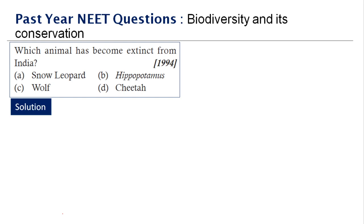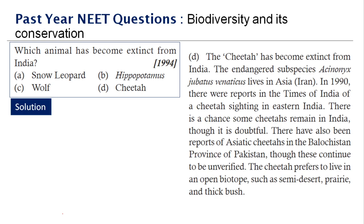Next question: which animal has become extinct from India? The right answer is cheetah. The cheetah has become extinct from India. In 1919 there were reports from The Times of India of cheetah sightings in eastern India, and there have been unverified reports of Asiatic cheetahs from a province in Pakistan. The cheetah prefers open biotopes such as semi-desert or thick bushes, but its extinction from India is about 90% confirmed.